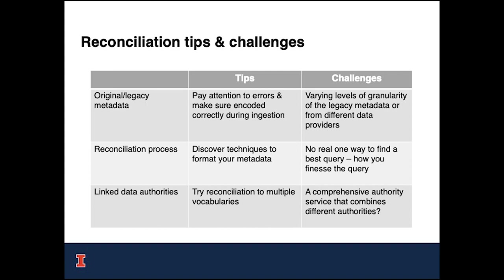A more long-term question to think about is whether it is feasible to have a comprehensive authority service that combines different authorities. Just like VIAF, which combines name authority files of major national libraries and institutions, there could be a possibility to expand the idea — such as to subject authorities — to make it easier and more efficient for librarians reconciling their legacy data.